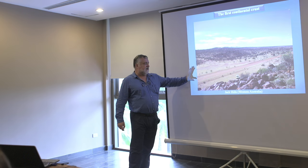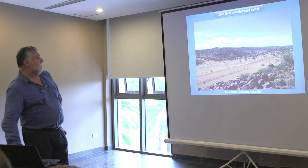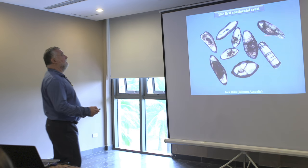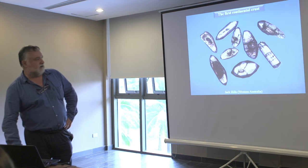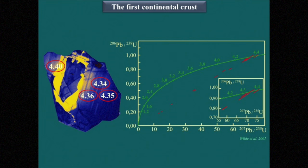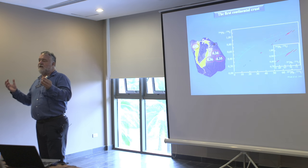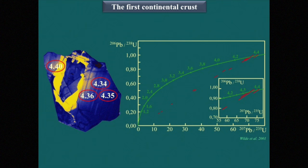You certainly know about Jack Hills in Western Australia. There are some sediments about 3.8 billion years old, and they contain zircon crystals that give ages of 4.3 to 4.5 billion years. Even one sample gave an age of 4.4 billion years — obviously Hadean ages. We do not know the rock in which this zircon crystallized; they are in a younger rock. They probably crystallized in a granite that was eroded and weathered, and only the resistant zircons remained, preserved in sediments.